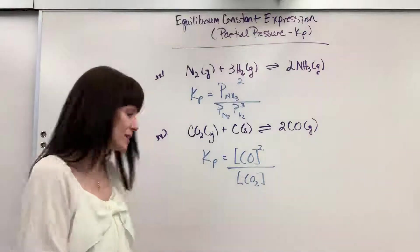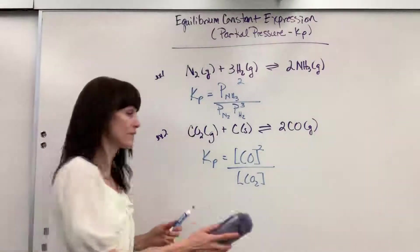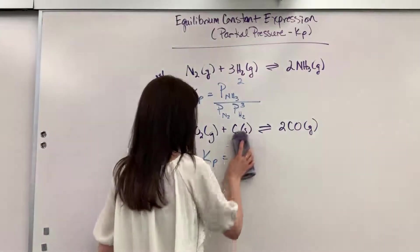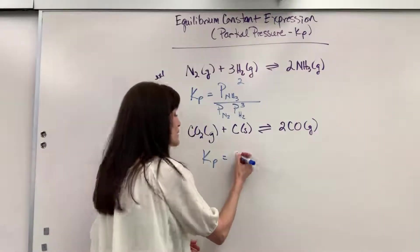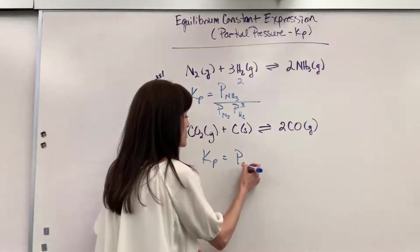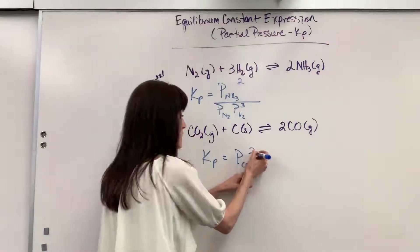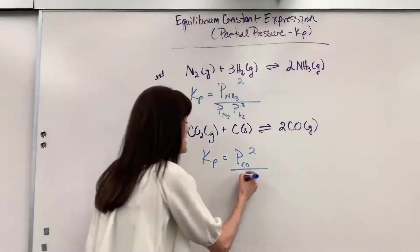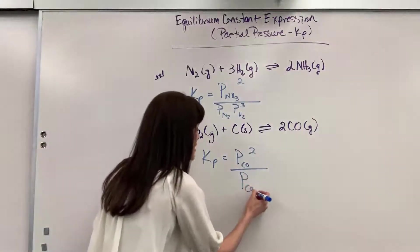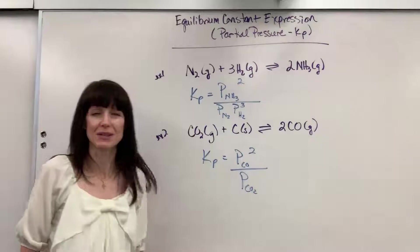Oh my goodness, do you know what I did? And I'm actually glad that I did this because that's exactly what my students would do. I wrote down concentrations. It's partial pressure. They give you partial pressure. It's a partial pressure of carbon monoxide squared. Be really careful on that. I just made the mistake.